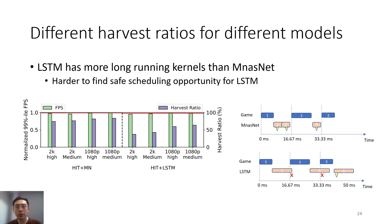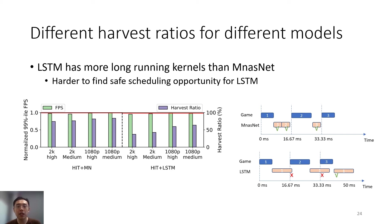We observe that different deep learning models may benefit differently from co-location. For example, collocating AmNet and LSTM with the game Hitman 3 shows that AmNet can harvest over 70% of free GPU cycles, but LSTM can only harvest about 50%. The root cause is kernel duration. AmNet is composed of many small kernels like matrix multiplication, which easily fit into idle periods from games. However, LSTM's dynamic computation requires complex logic inside the kernel, leading to longer kernel durations. The long LSTM kernels can only be scheduled when idle GPU periods from games are long enough to fit them, making LSTM hard to harvest short GPU periods, especially at high rendering quality.